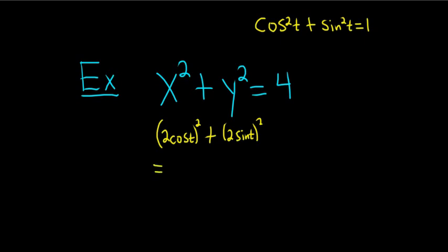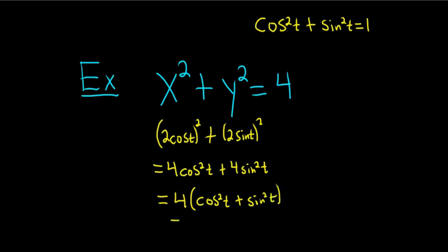So on the left you square the 2 so you get 4 cosine squared t. Then over here we get 4 sine squared t. And what you can do now is you can pull out the 4, so this is 4 parenthesis and then we have cosine squared t plus sine squared t. So we end up with 4 times 1 which is 4. So it does indeed check.